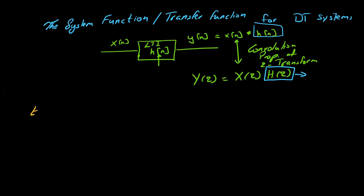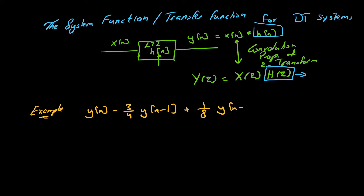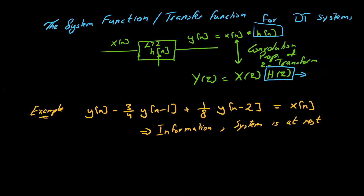Let us say we are given the difference equation: y[n] minus (3/4)y[n-1] plus (1/8)y[n-2] equals x[n], which is the input. Moreover, we are given that the system is at rest — that is, it does not have any initial conditions, and the system is also causal. What would be the transfer function H(z) for this system?